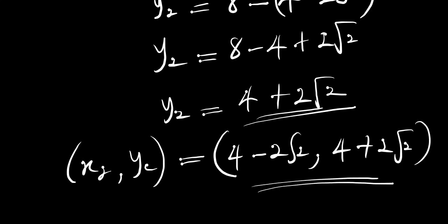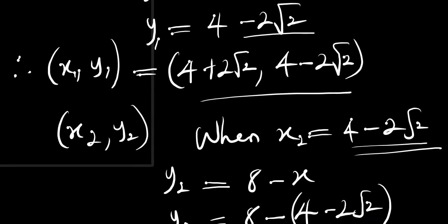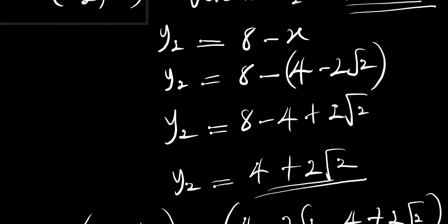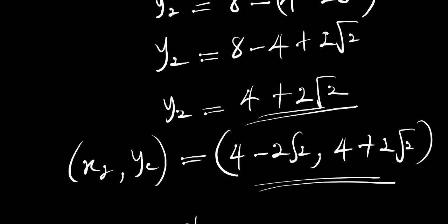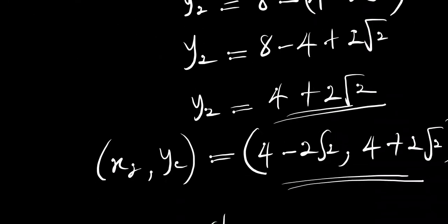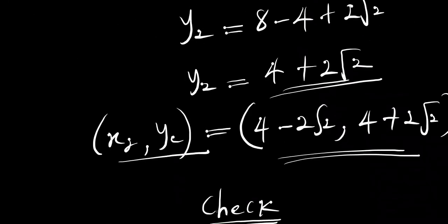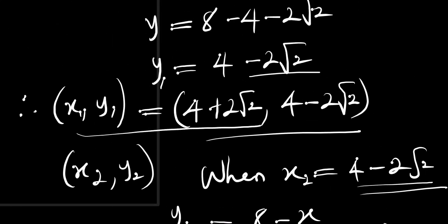So these are the solutions: x1 equals 4 plus 2 root 2, y1 equals 4 minus 2 root 2; and x2 equals 4 minus 2 root 2, y2 equals 4 plus 2 root 2. Now we can go ahead and check if what we have solved is correct. We can use either x1, y1 or x2, y2 to check — let's use x1 and y1.